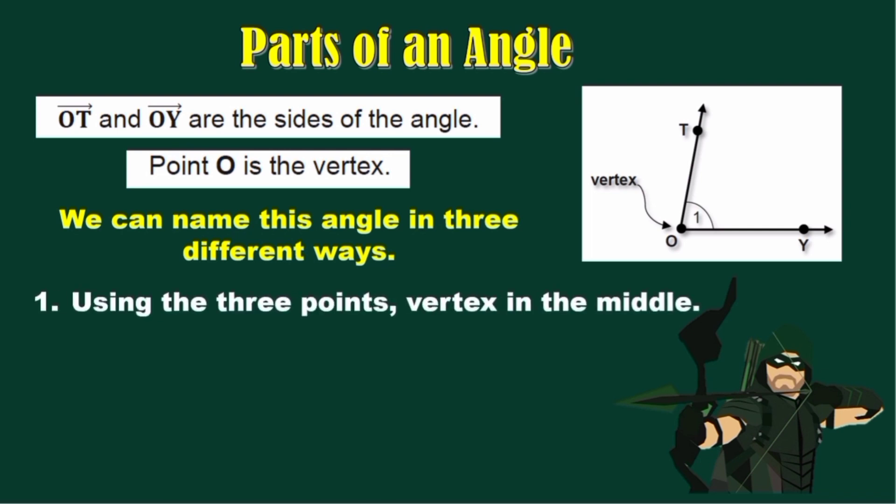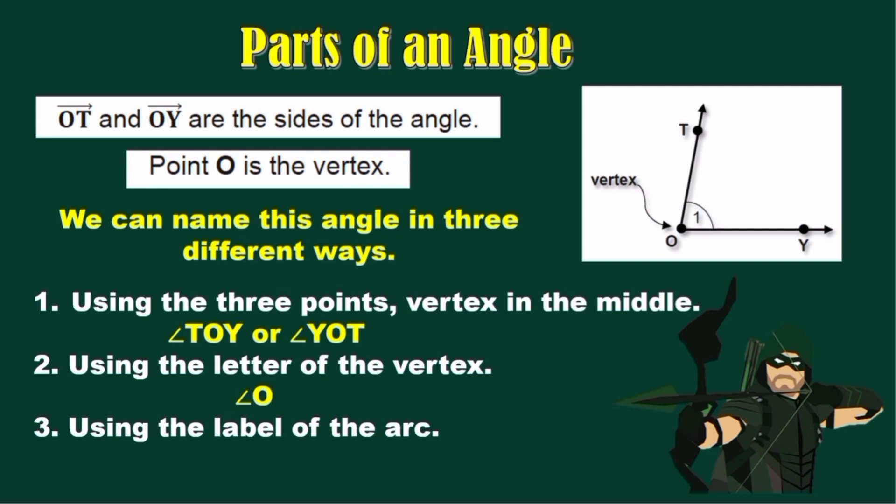Number 1, using the three points, vertex in the middle. Using the illustration, we have angle T-O-Y or angle Y-O-T. Number 2, using the letter of the vertex. In our example, that is angle O. Number 3, using the label of the arc. In our example, that is angle 1.